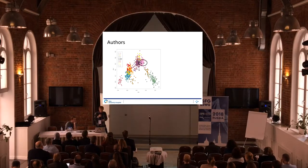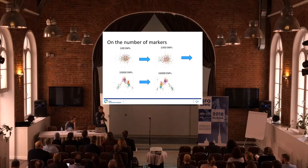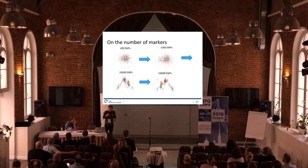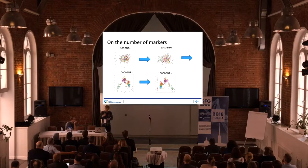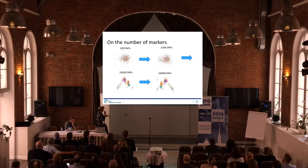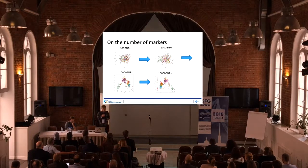We also tried to recreate this analysis using fewer markers — I think this is based on 16,000 markers total but we start with 100 markers. If we use only 100 markers, there's just a big blur with no clear pattern. If we use 1,000 markers, you start to see some pattern with some individuals clustering, but still little information. If we use 10,000 markers, the pattern starts to become clear, resembling what we saw before.